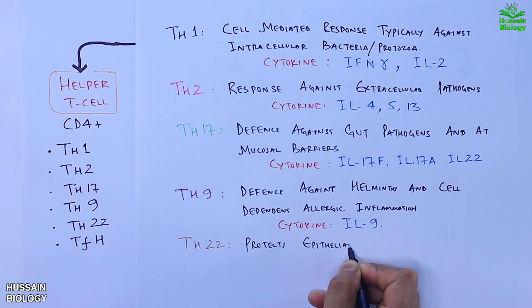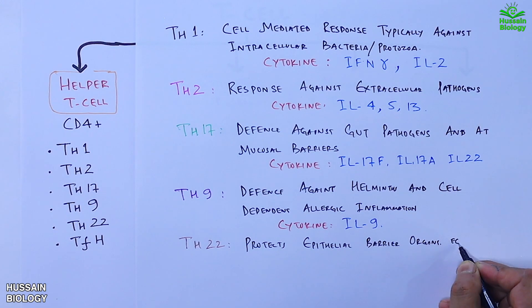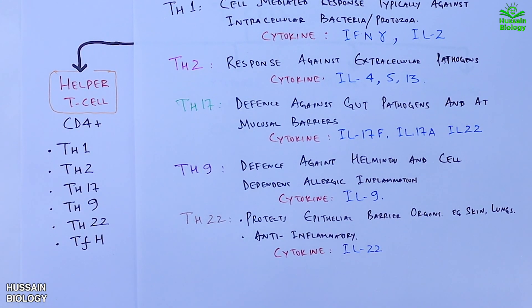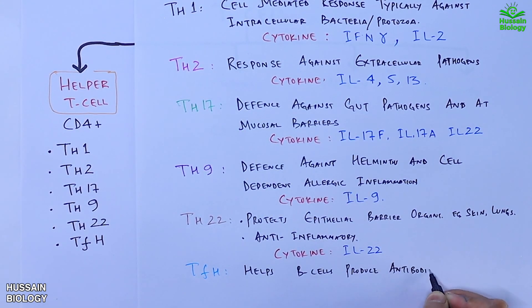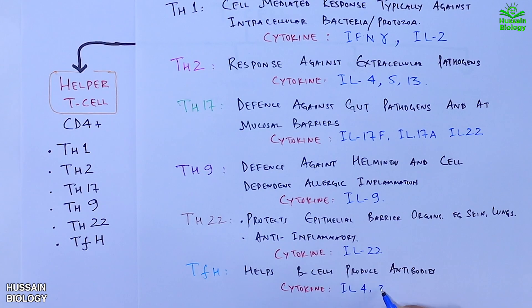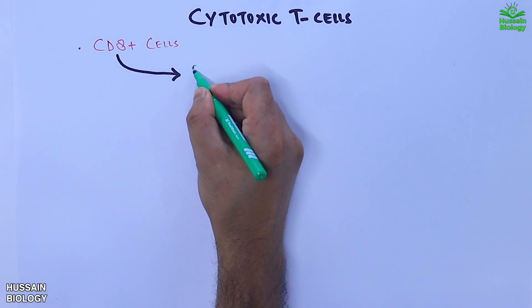Th22 protects epithelial barrier organs such as skin and lungs, and also has an anti-inflammatory effect, releasing cytokines like IL-22. Tfh helps B cells produce antibodies and secretes cytokines like IL-4 and IL-21.